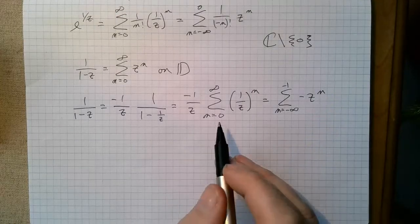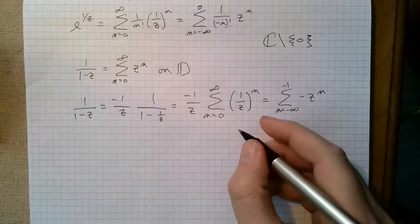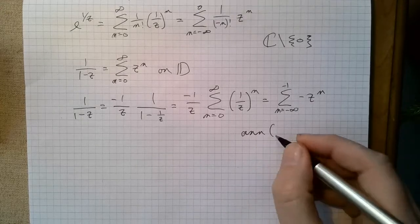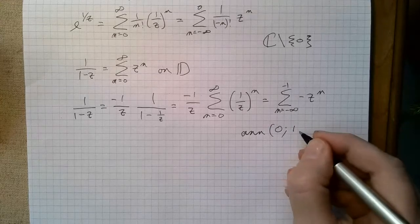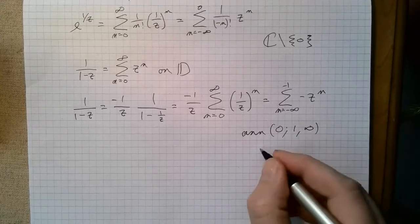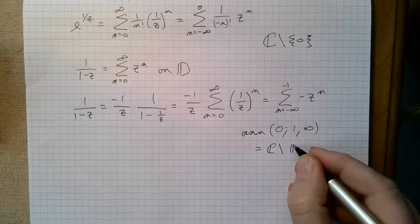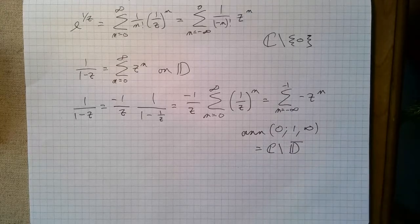And so this converges, this guy converges in this not-quite annulus, right, in this whole plane, which is just C minus the closed unit disk, right?